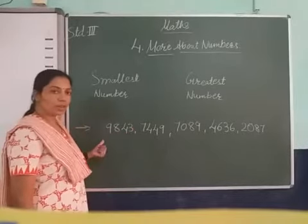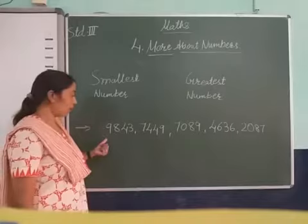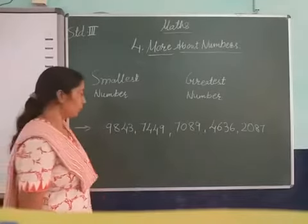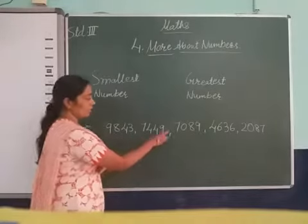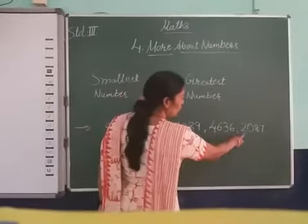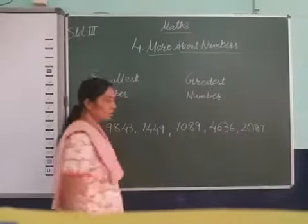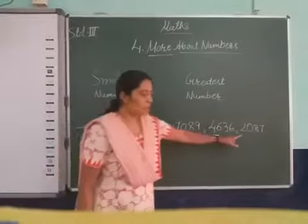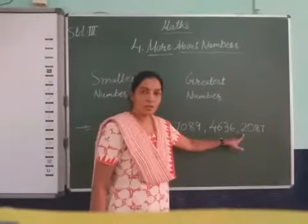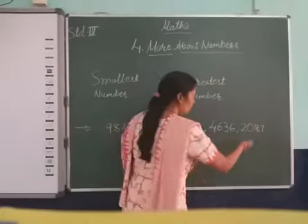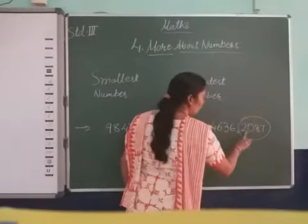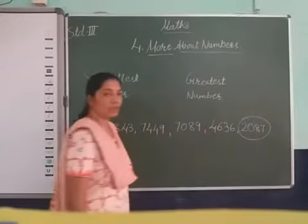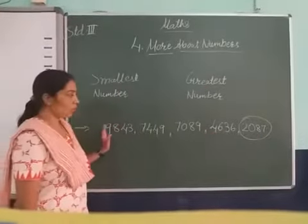We will start from the left side and compare the numbers: 9, 7, 7, 4, 2. Out of these, 2 is the smaller one. So we will put the circle here. 2, 0, 8, 7 is the smallest.